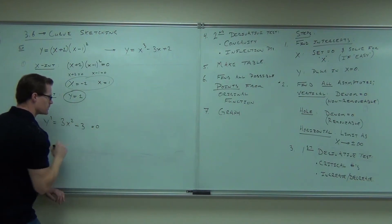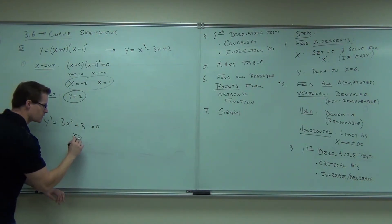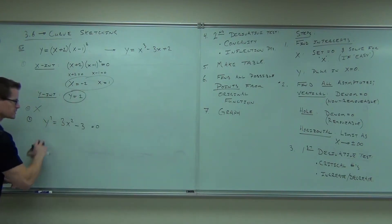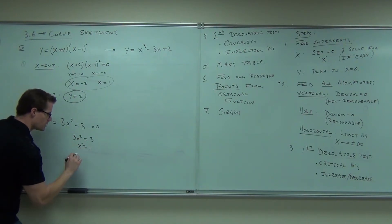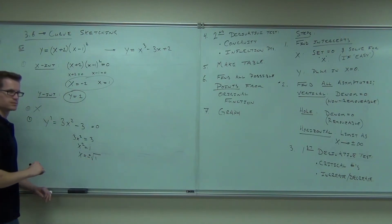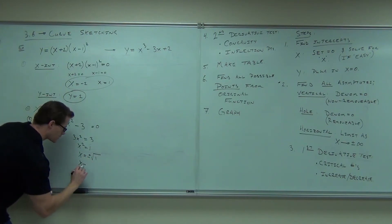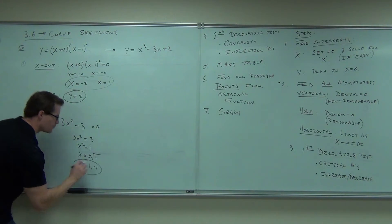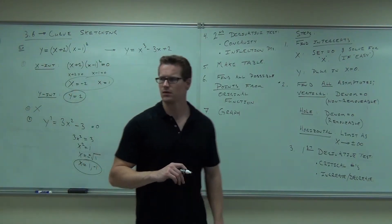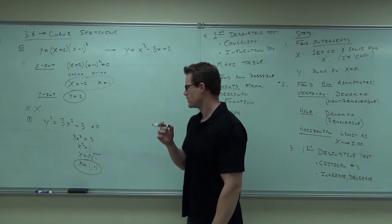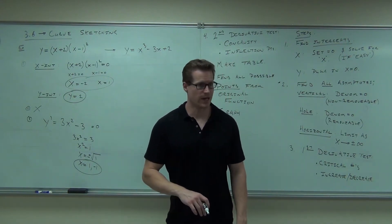If I set that equal to zero, I'm going to get x equals, well, I'll show the work on that. This will be 3x squared equals 3, x squared equals 1, x equals plus or minus the square root of 1. x equals 1 and negative 1. You okay with that so far? That's the first derivative test.